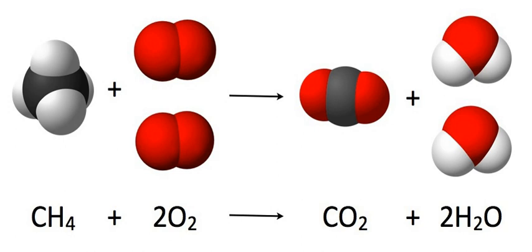The law of conservation of mass dictates that the quantity of each element does not change in a chemical reaction. Thus, each side of the chemical equation must represent the same quantity of any particular element. Likewise, the charge is conserved in a chemical reaction. Therefore, the same charge must be present on both sides of the balanced equation.